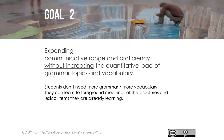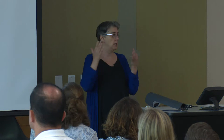Another goal is expanding the communicative range and proficiency without increasing the quantitative load of grammar topics and vocabulary. Some people have said, yes, but I already have to do so much. It's not about giving more grammar, more vocabulary. If students learn how to foreground meaning with the structures and lexical items they're already learning, you're accomplishing two things at the same time. It gives them a greater range of communication. And that's the irony with communicative language teaching — it's not really communicative if you're only working with literal levels of meaning. So let's build on that concept and include the literary.